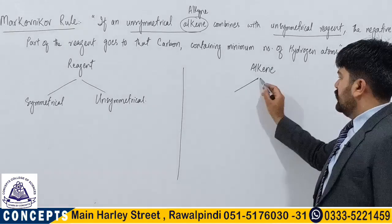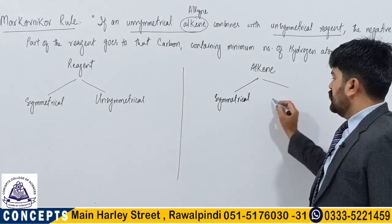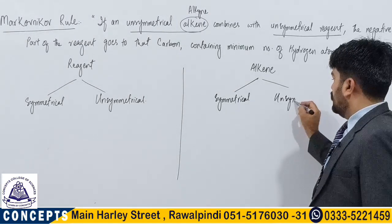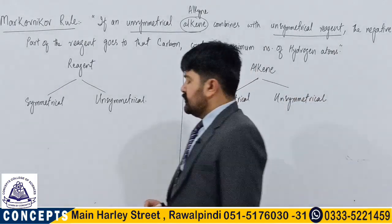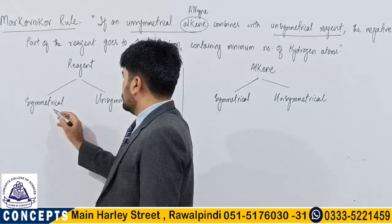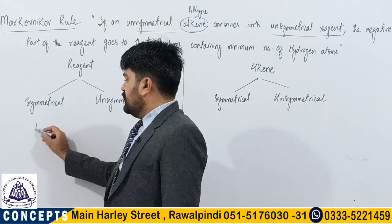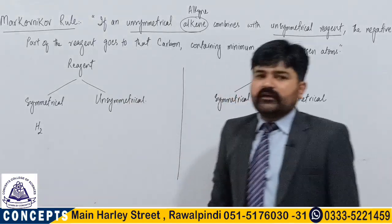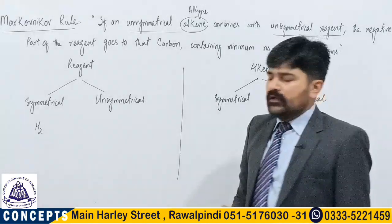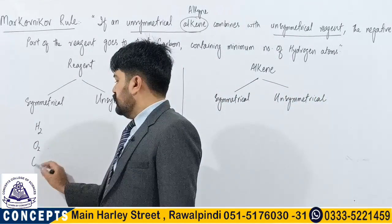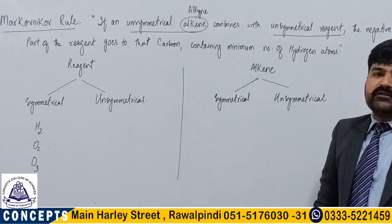Likewise, an alkene may be symmetrical or it can be unsymmetrical or asymmetrical. By giving suitable examples you can easily understand the terminologies. Symmetrical reagent means those types of reagents that are mainly formed of similar atoms, like hydrogen — both hydrogen atoms combine to form a hydrogen molecule. Likewise oxygen and ozone are the main reagents that can react with alkene in general chemistry.